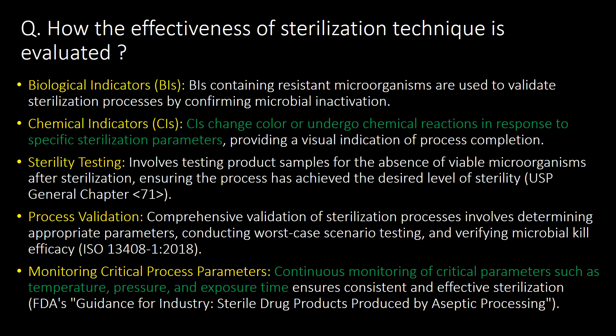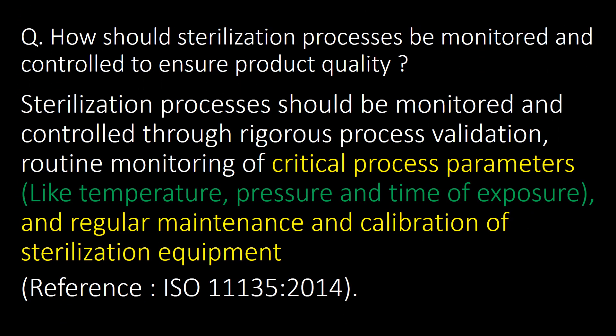How is the effectiveness of a sterilization technique evaluated, and how should the process be monitored and controlled? Effectiveness is evaluated using five key approaches: challenging with biological indicators, chemical indicators, sterility testing, process validation, and monitoring of critical process parameters. Sterilization processes should be monitored and controlled through rigorous process validation, routine monitoring of critical process parameters, and regular maintenance and calibration of sterilization equipment.